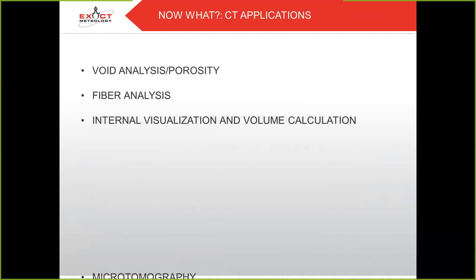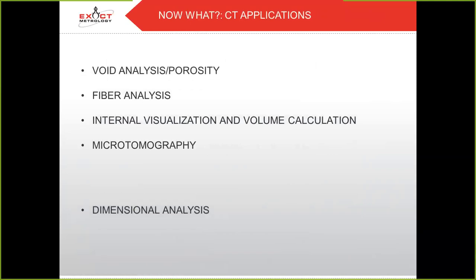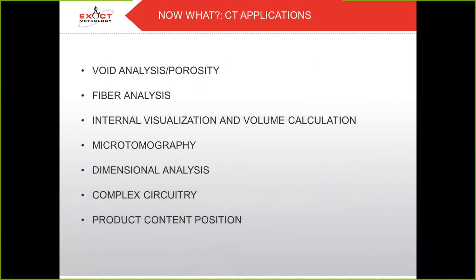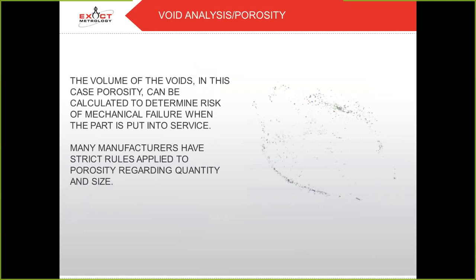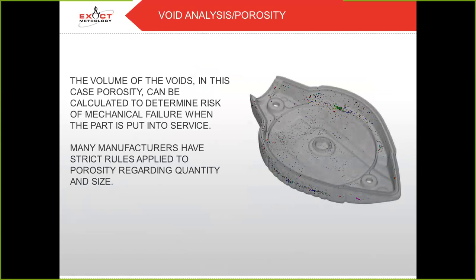So now you know how to CT scan — what applications can you use it for? You can perform void analysis, fiber analysis, check internals and volume calculations, and perform microtomography, among others. In void analysis, exploring the complete volume of the object allows you to see defects that would traditionally go unnoticed — for example, in a simple container of lip balm, a large void in the material caused by the filling method during manufacturing. The volume of voids (in this case, porosity) can be calculated to determine risk of mechanical failure when the part is put into service. Many manufacturers have strict rules applied to porosity regarding quantity, size, and location.